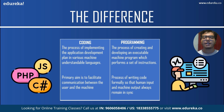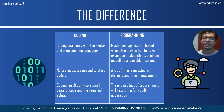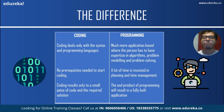Coding deals only with syntax and programming languages such as C, C++, Java, etc. — these are just different types of languages that the computer understands. But programming is much more application-based, where the person has to have expertise in algorithms as well. It is more about problem modeling and problem solving.